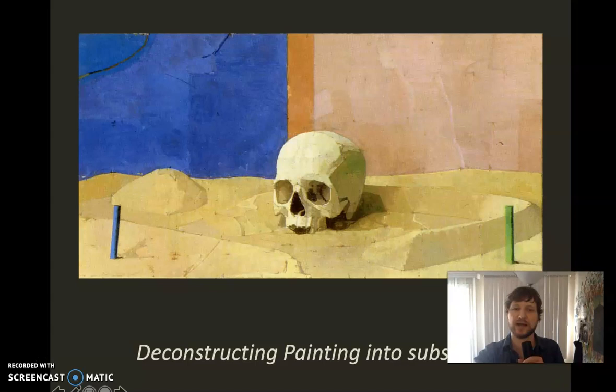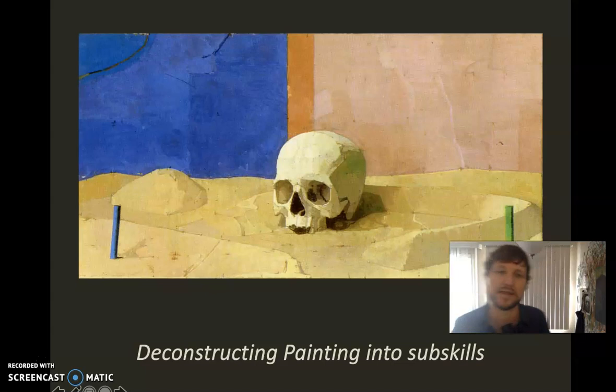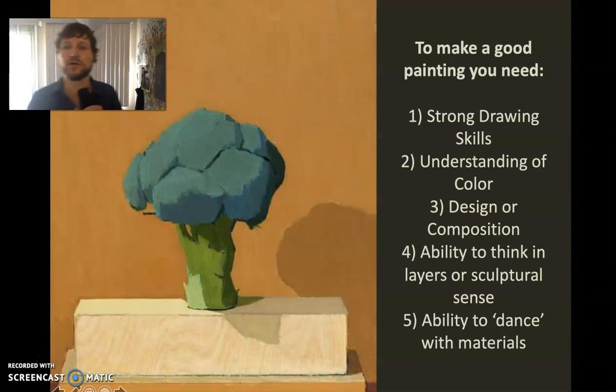Now let's talk about what you actually need to do to be a good painter. You need strong drawing skills — you need to understand structure and space. You need to understand color, which is really understanding light. And third, you need to understand how to design your picture plane — that's just the rectangle or whatever shape you're painting on.